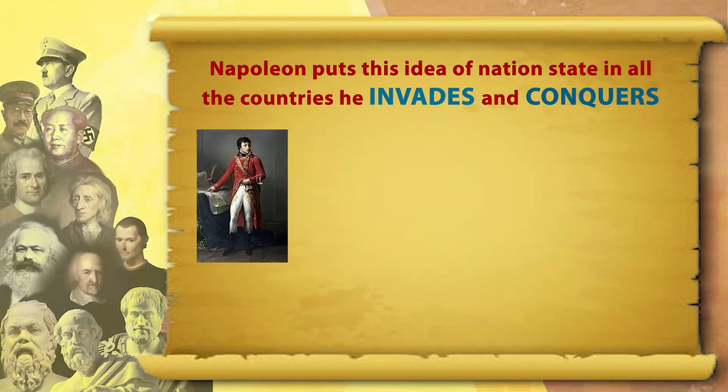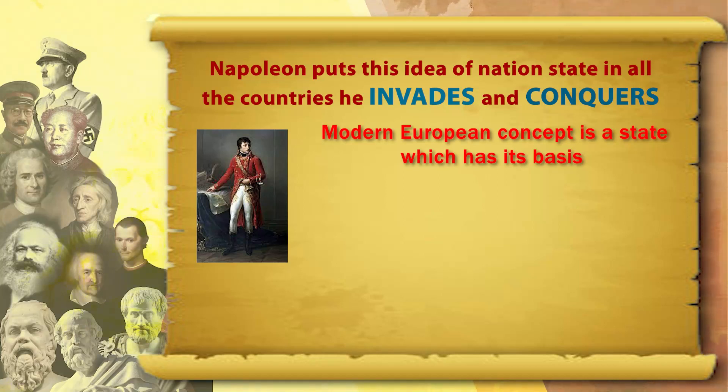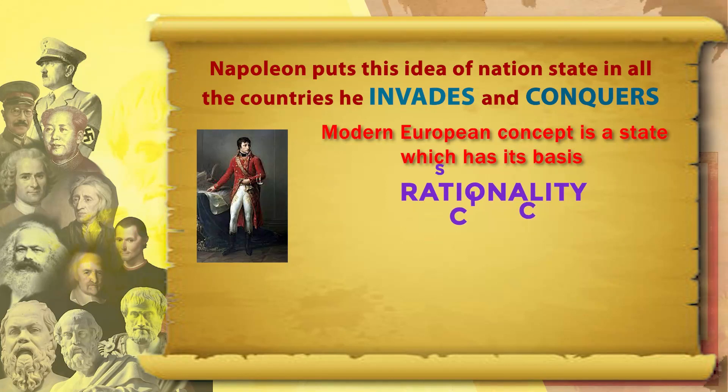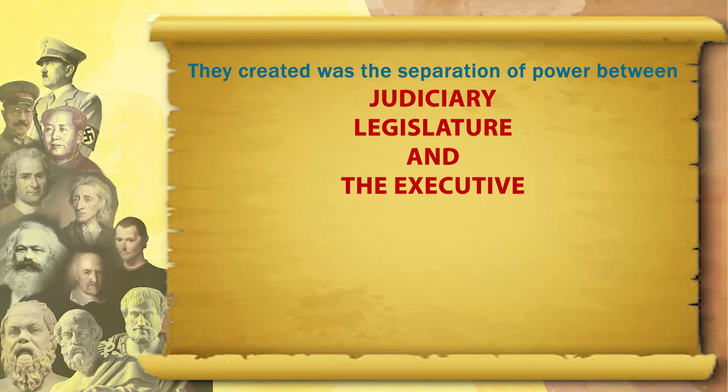This concept of nation state is exported throughout Europe by Napoleon. Napoleon puts this idea of nation state in all the countries he invades and conquers. The modern European concept is a state based on rationality, science, and logic — what makes people happy. The last invention of the Europeans in conceptual terms is the separation of powers between the judiciary, the legislature, and the executive.